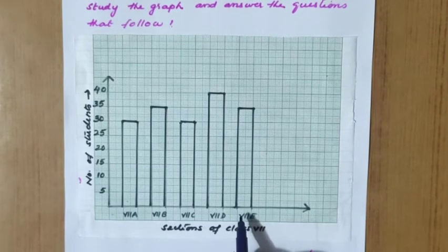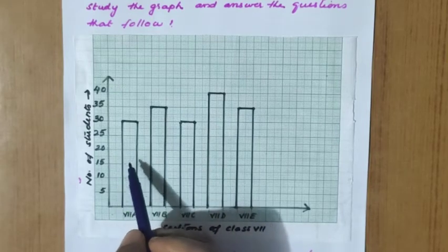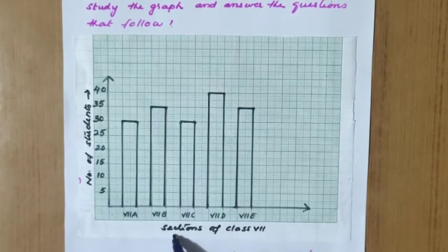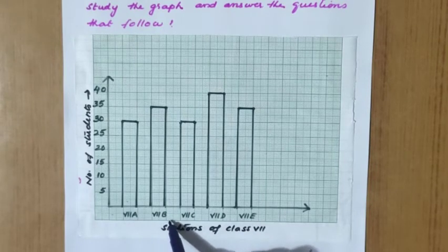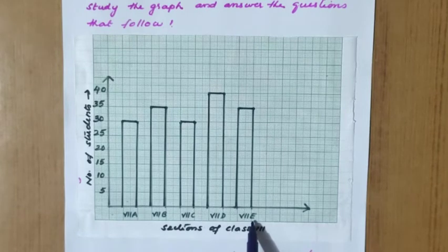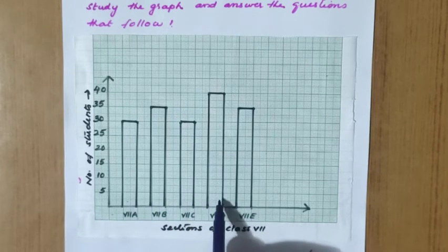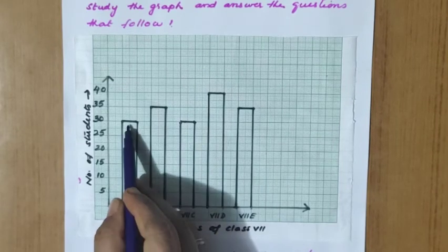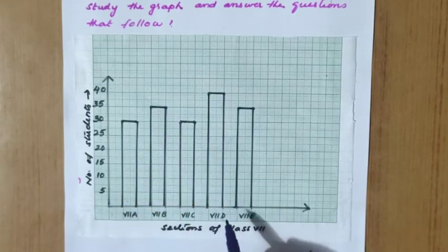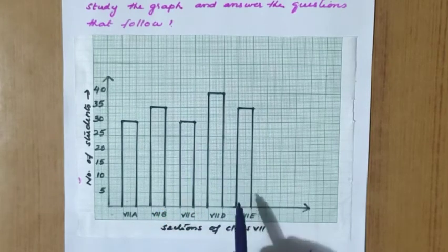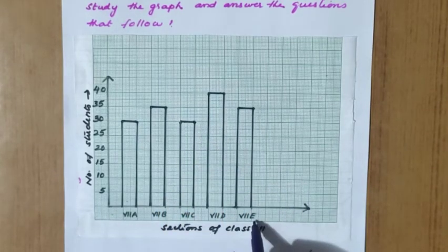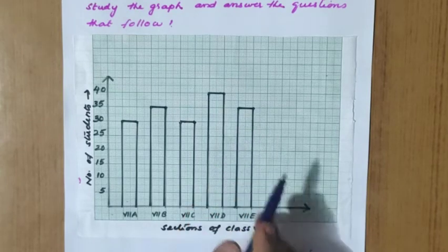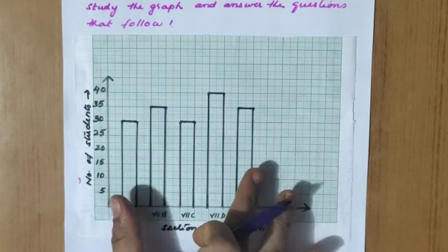A graph is given and we have to do the interpretation - draw inferences from the graph. The graph shows sections of class 7: 7th A, 7th B, 7th C, 7th D, and 7th E. 7th A has 30 children, B has 35, C has 30, D has 40, and E has 35 children.